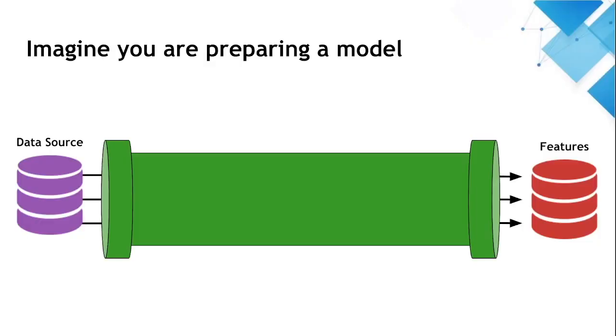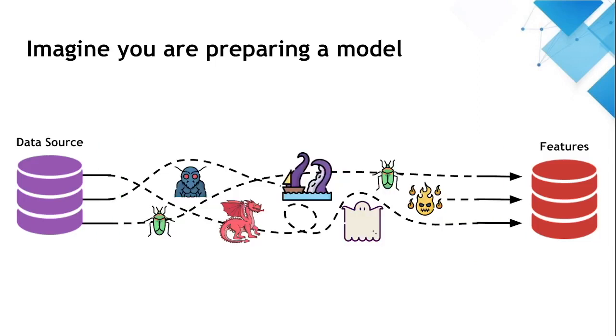There are many steps to writing an effective model. One of the most important involves deriving meaningful features from a given dataset to train the model. In many instances, once this pipeline is written and the model is making reasonable predictions, it is rarely given a second thought or revisited. Downstream users rarely have an accurate idea of what exactly is going on in these pipelines, especially if they didn't write it. But if you pull back the curtain, you might find it's full of dragons and monsters and perhaps more than a few bugs.